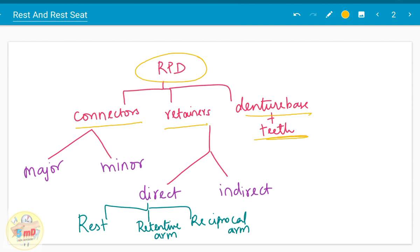Connectors are classified as major connectors and minor connectors. Retainers can be either direct retainers or indirect retainers. Among the direct retainers, there are three parts: rest, retentive arm, and reciprocal arm. So, what are the rest and rest seats?